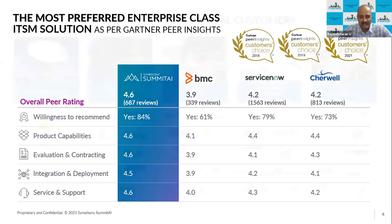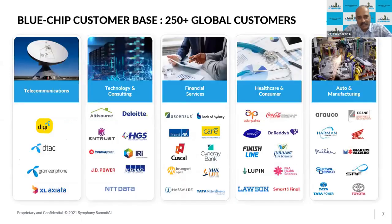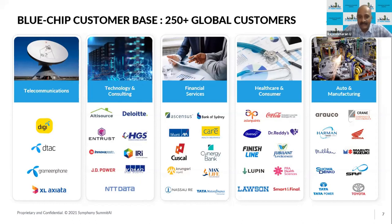Summit AI has leadership in many of the verticals we operate in. Most leading telecom companies are Summit AI customers. In the financial services space, there are 35+ BFSI companies from India as Summit customers. In the automobile sector, from Toyota to Maruti, Bajaj Auto, Royal Enfield, Ola, and Honda Motors — all are Summit AI customers.